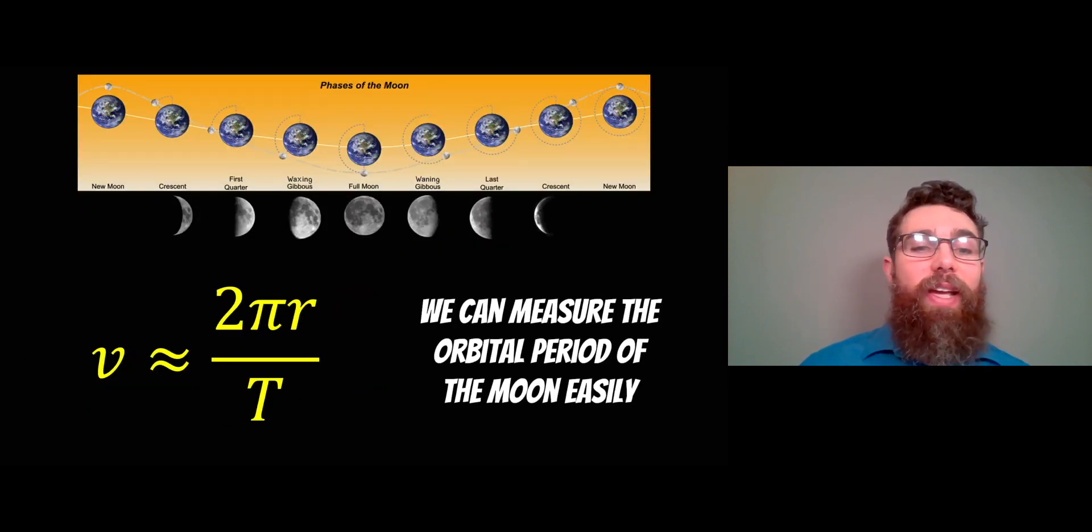If we look at the lunar phase, from one new moon to another new moon, that can give us an idea of the orbital period. It's gone all the way around and back to the same phase that it was before. That gives us the orbital period of the Moon just by looking at the phases.